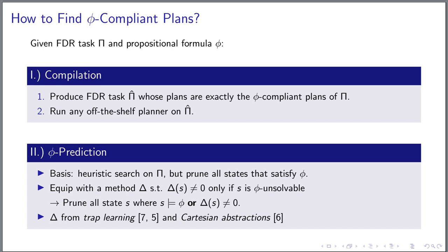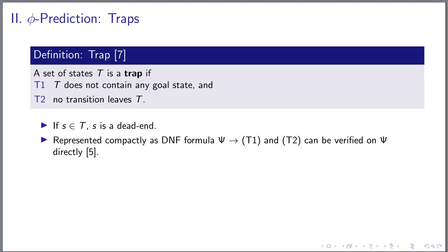To this end, we adapted two well-known methods, traps and abstractions. Since the idea of pruning phi-unsolvable states is very much related to dead-end detection, traps are a natural choice for the advanced prediction.